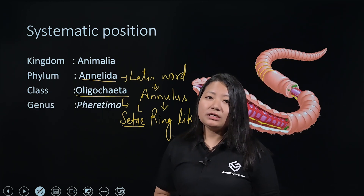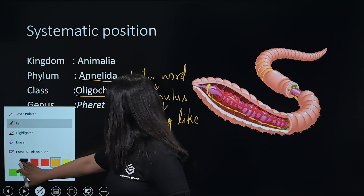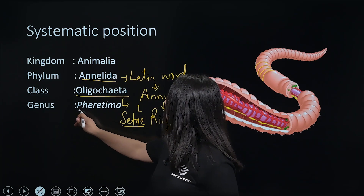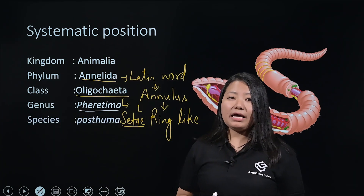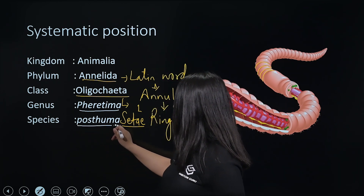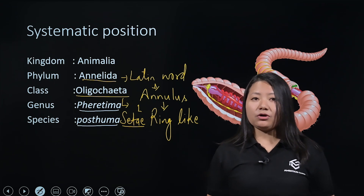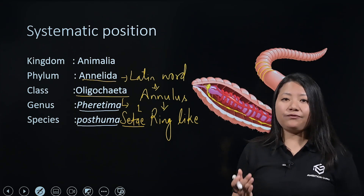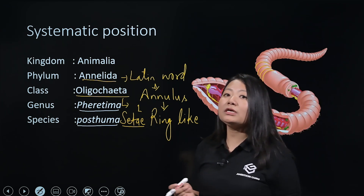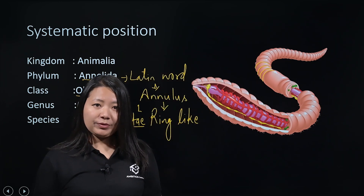The genus of the Earthworm is Ferritima, and the species is posthuma. So the scientific name for the Earthworm is Ferritima posthuma. This completes the systematic position of the Earthworm.